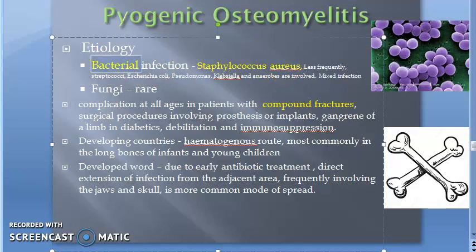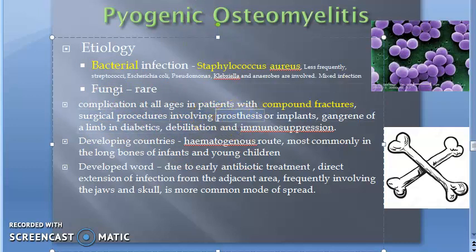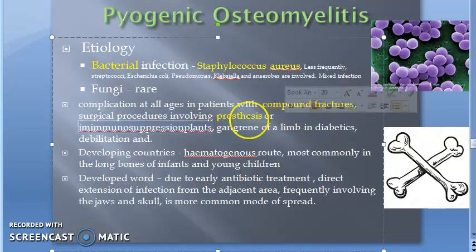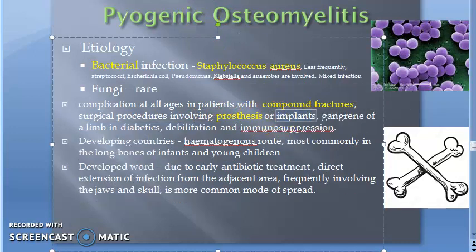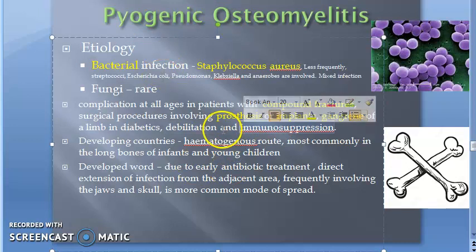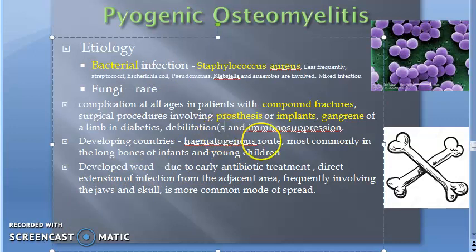A compound fracture with Staphylococcus is one route. It can also be a complication of a surgical procedure involving a prosthesis or implant. If a person has diabetes and develops gangrene, infection can reach the bone through the gangrene, causing osteomyelitis. Debilitation and immunosuppression also predispose — a weak or immunosuppressed person is more susceptible to infection.